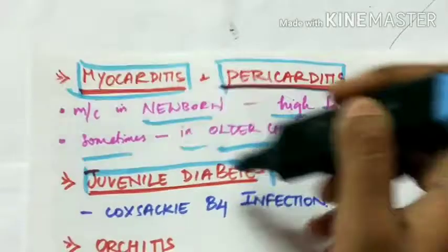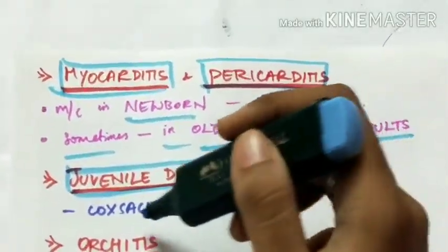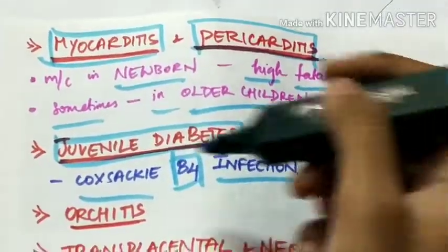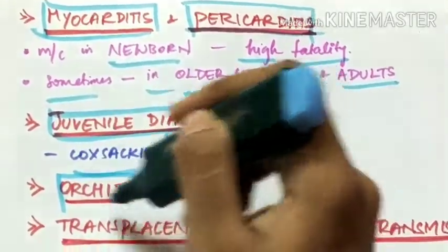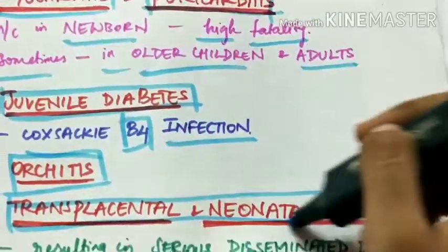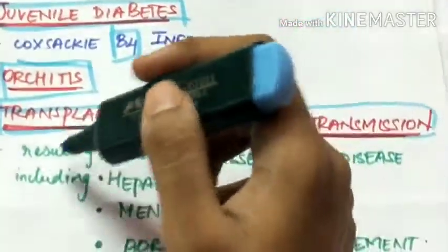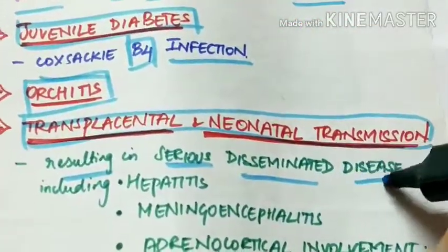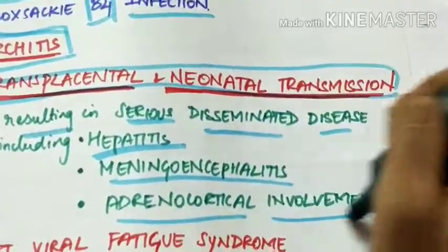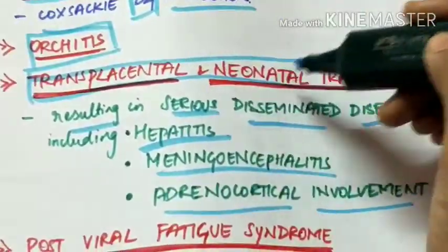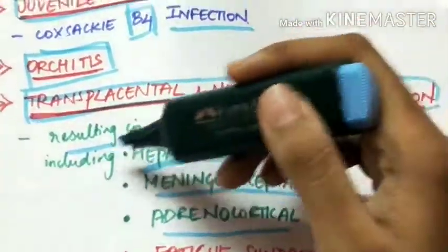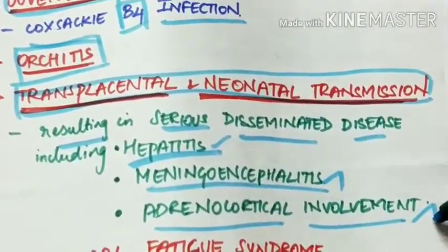Juvenile diabetes is most commonly caused by Coxsackie B4 infection. Group B viruses can also cause orchitis (inflammation of the testis). Transplacental and neonatal transmission is also possible, resulting in serious disseminated disease including hepatitis, meningoencephalitis, and adrenocortical involvement.